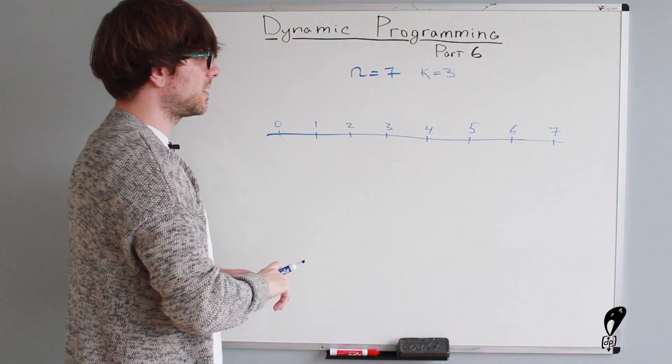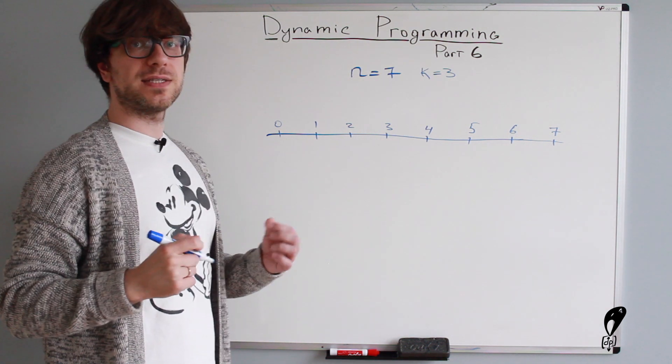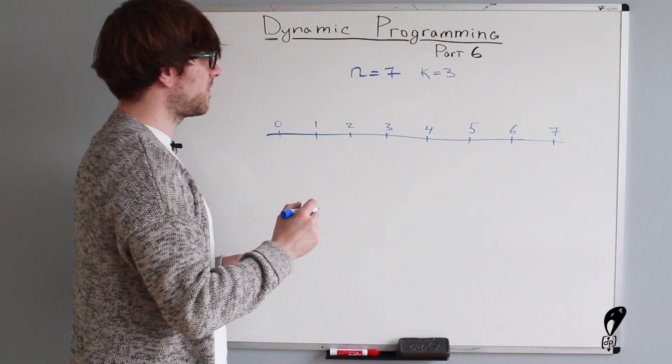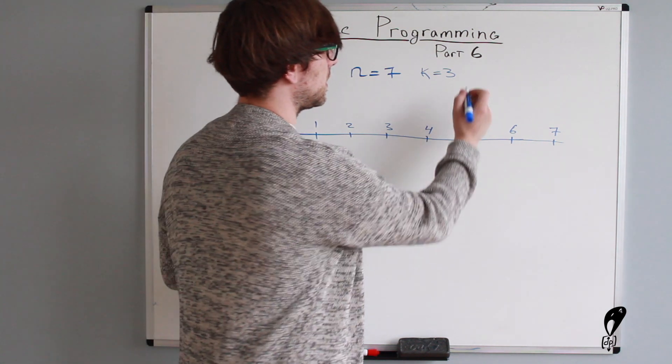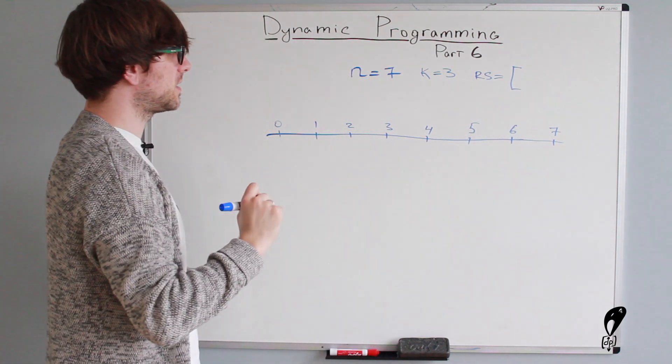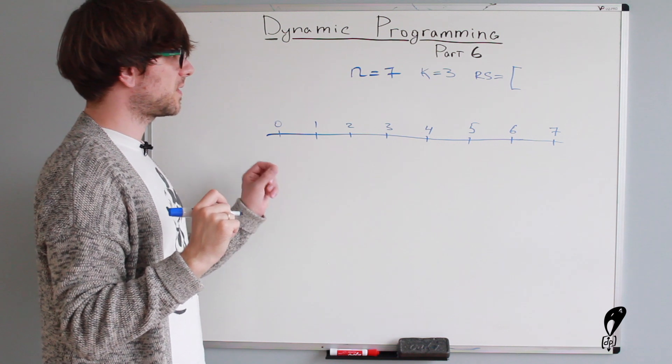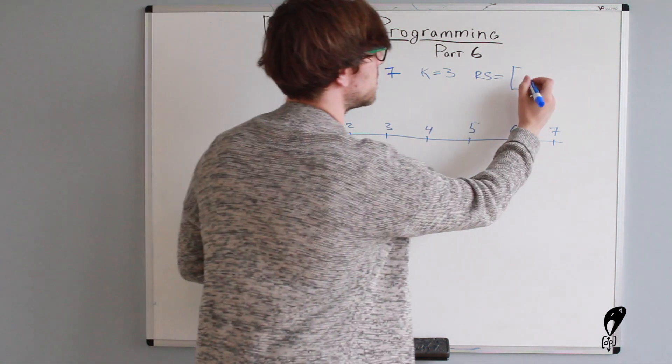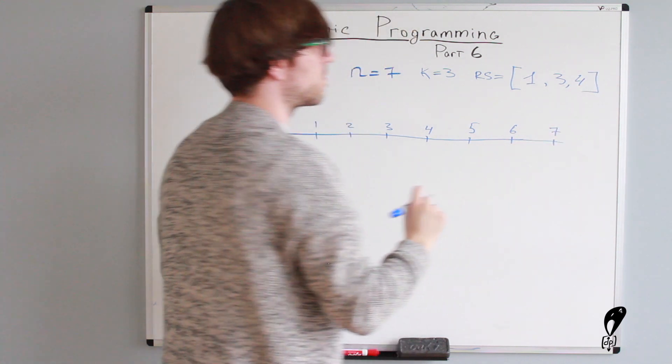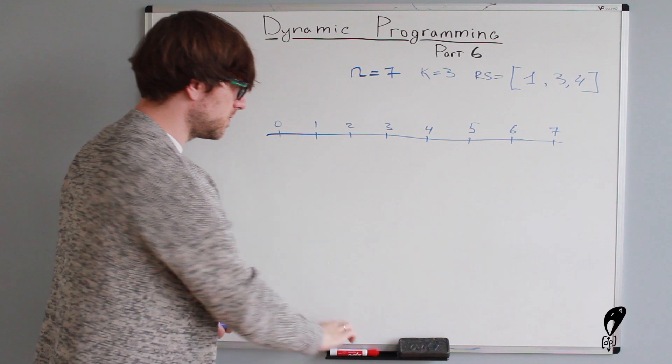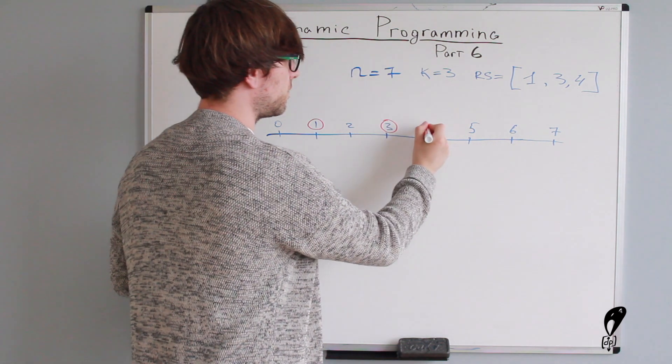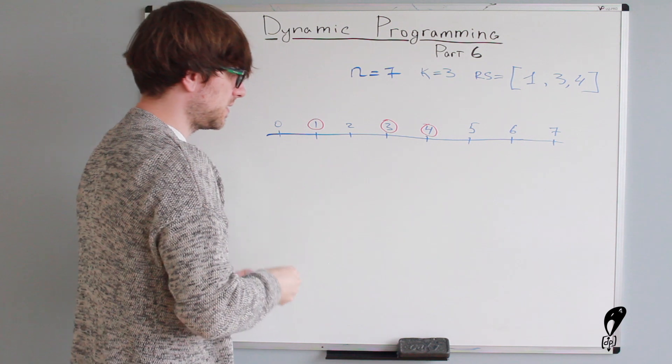So this is the top. And now we also need to highlight which stairs are red, those stairs that we are not allowed to step on. So let's say we'll have an array of, let's call it RS, which is like red stairs. And this array will represent indices of stairs that are red. So we'll say, let's say one, the first stair, third stair, and then let's say fourth stairs are red. So we're not allowed to step on those. And I'm also going to use the red marker to highlight them here. So first, third, and fourth, we're not allowed to step on these stairs.